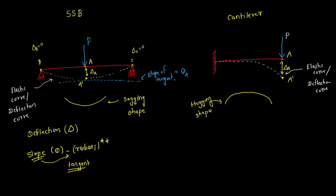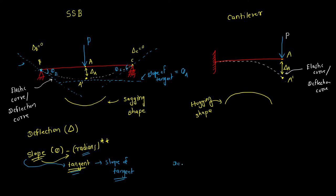To find theta B, we draw a tangent at point B — the slope of that tangent gives theta B. Similarly, for point C it gives theta C. So to find slope at any point, draw a tangent at that point and calculate its slope — that value is the slope at that point, measured in radians. In the next video, we will write down the formal definitions of slope and deflection and see how to convert degrees into radians.